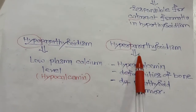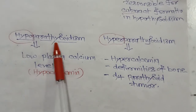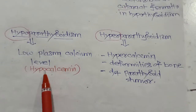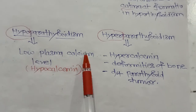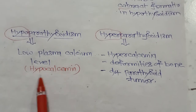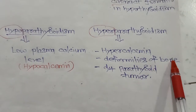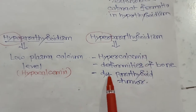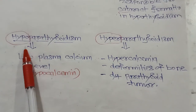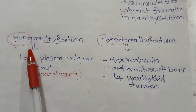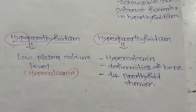There are two clinical conditions to consider: hypoparathyroidism and hyperparathyroidism. Hypoparathyroidism is characterized by hypocalcemia, or low plasma calcium, along with its associated manifestations. Hyperparathyroidism is characterized by hypercalcemia, bone deformities, and is mostly caused by a parathyroid tumor.